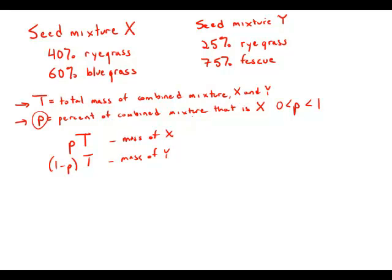We know that from the mass of X, 40% of that is ryegrass. So 0.4PT is the ryegrass coming from mixture X. And then 0.25 times (1 minus P) times T is the amount of ryegrass coming from Y. This should account for all the ryegrass in the mixture, and this mixture T is 30% ryegrass.